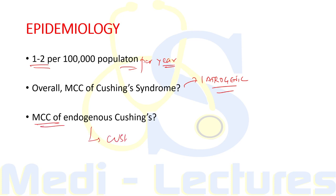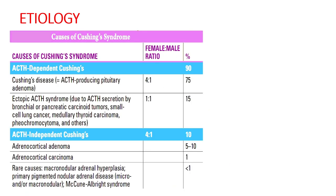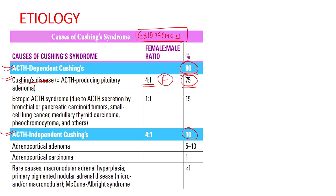Among endogenous causes, the most common is Cushing's disease — pituitary corticotrop adenoma. Ninety percent of all endogenous cases are ACTH dependent, and 10 percent are ACTH independent. Among the ACTH dependent cases, Cushing's disease accounts for 75 percent of all endogenous cases, with a male-to-female ratio of 1:4, meaning it is more commonly seen in females.